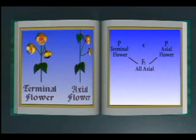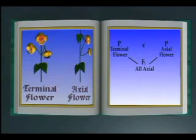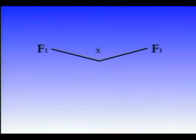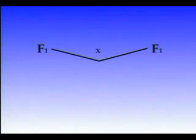All the flowers produced in the F1, or first filial, generation had axial flowers. I wondered where the terminal factor went. I decided to cross the F1 plants. The F1 plants were not true breeding — that is, they did not produce offspring like themselves.